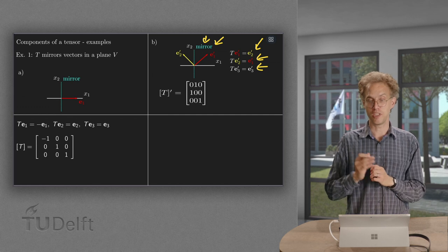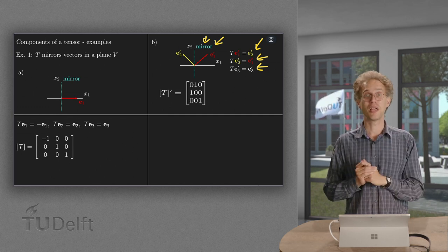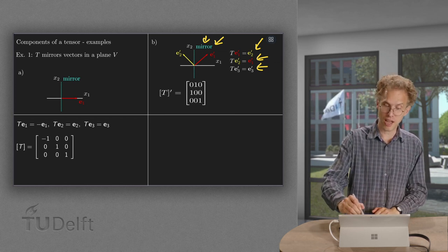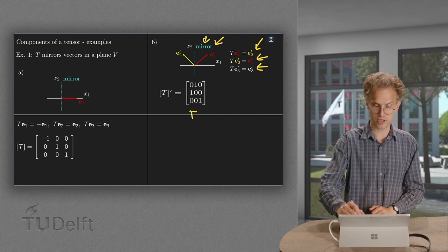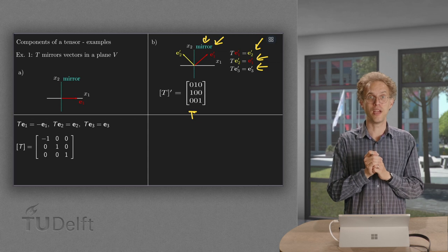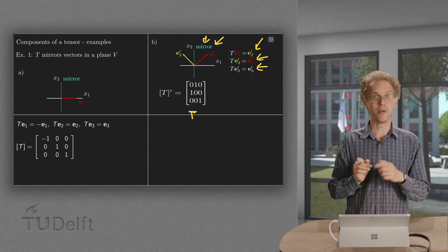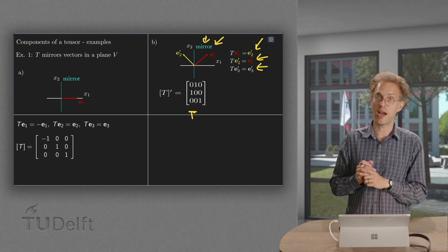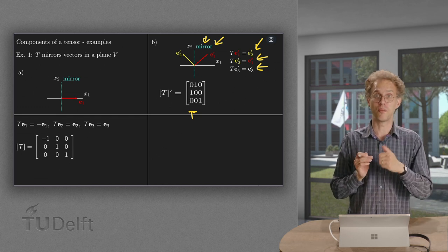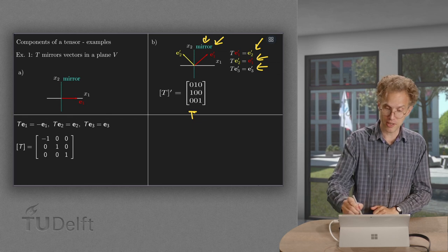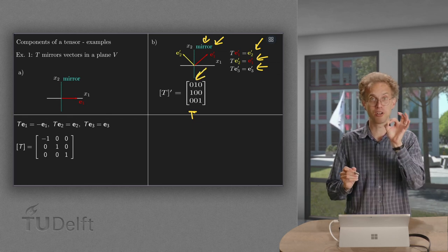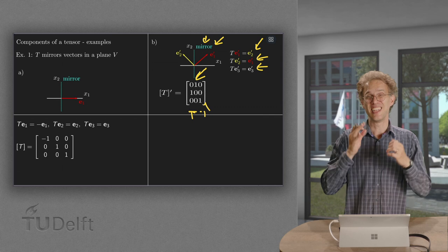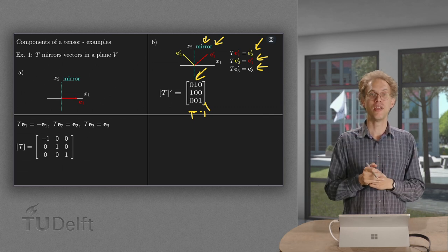So what do I know? T(e1 prime) equals e2 prime, so that equals 0 times e1 prime plus 1 times e2 prime plus 0 times e3 prime. So now the first column of our matrix T in the primed basis becomes 0, 1, 0 for the first column. And for the second column, e2 prime is mapped to 1 times e1 prime plus 0 times e2 prime plus 0 times e3 prime, so the second column becomes 1, 0, 0, and the third column nothing changes.